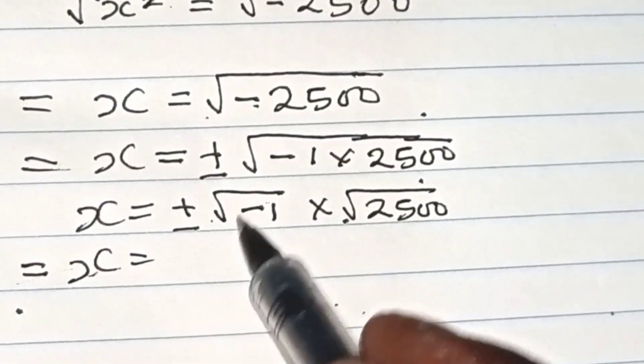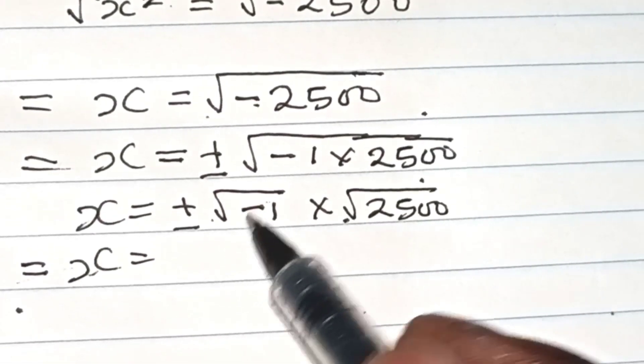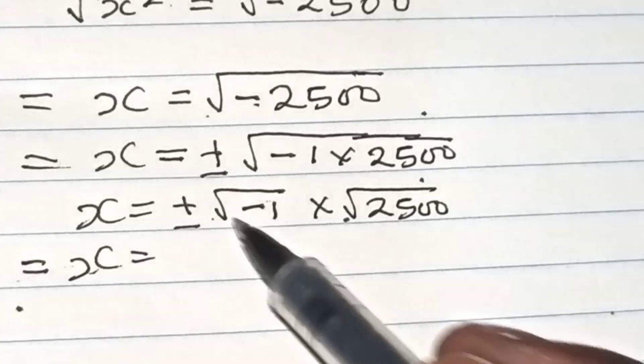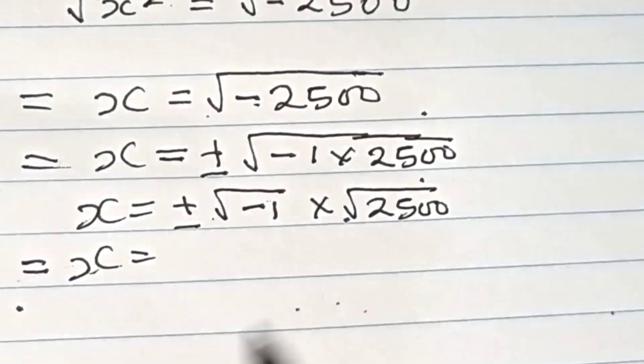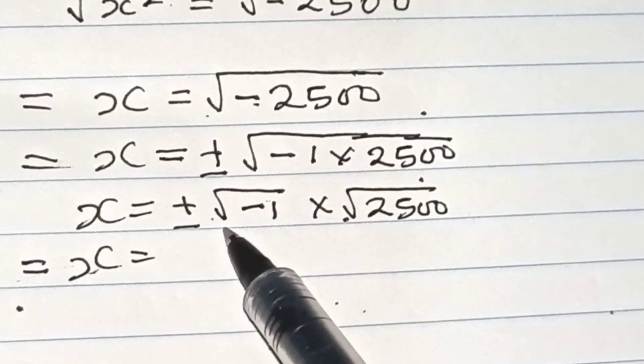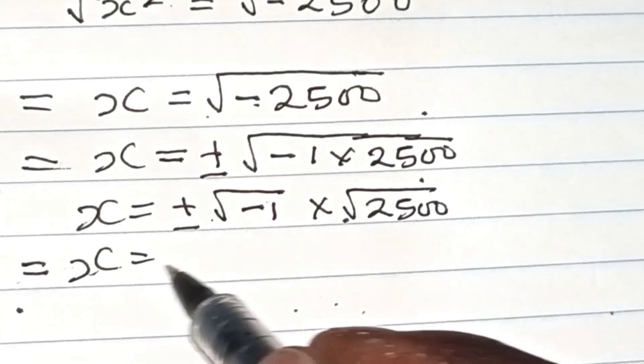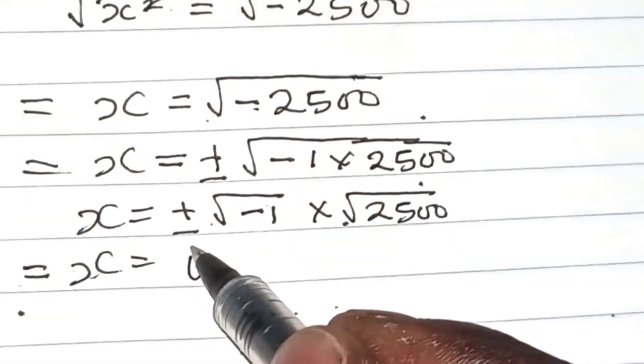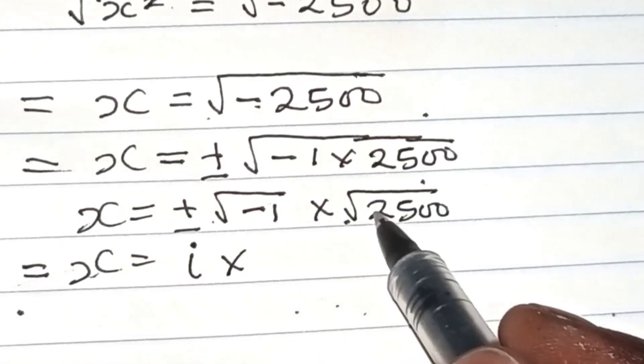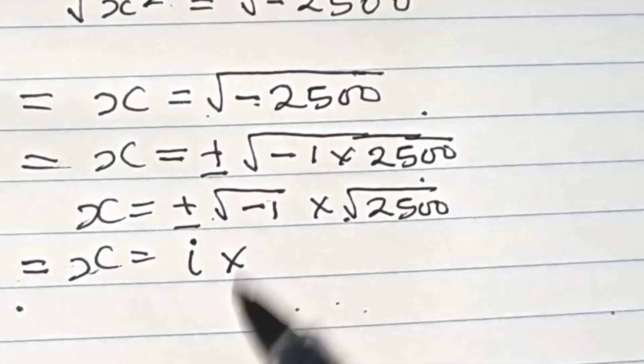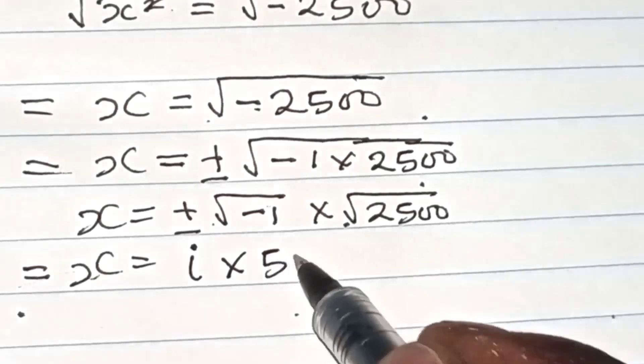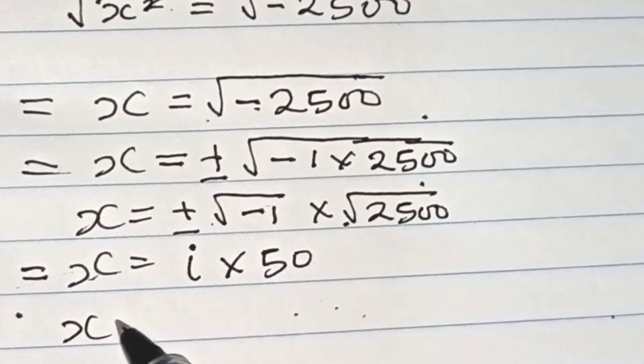Actually, minus one relates to complex numbers. In complex numbers, whenever we have square root of minus one, it equals i, multiplied by square root of two thousand five hundred, which is 50. So X equals plus or minus 50i.